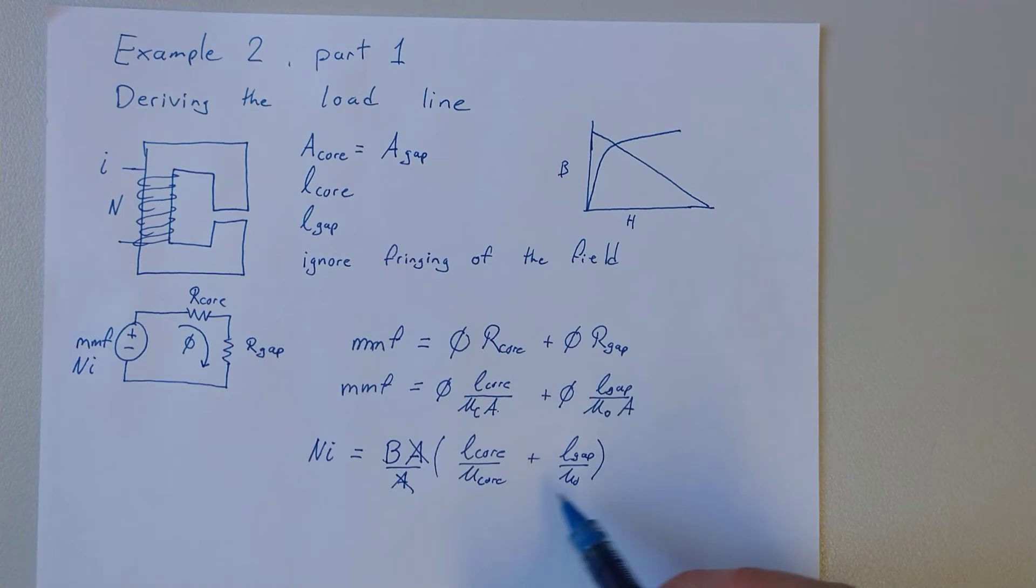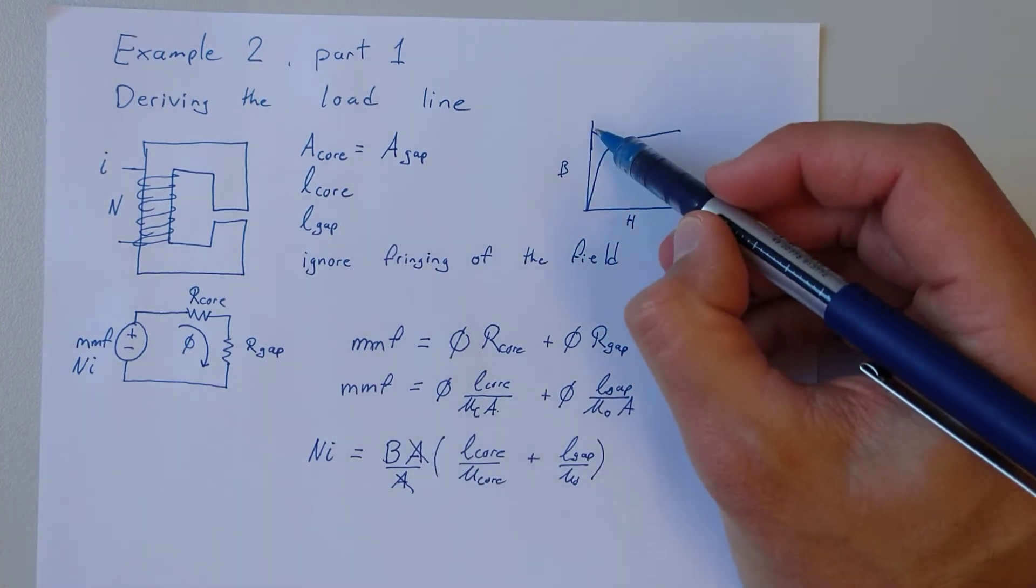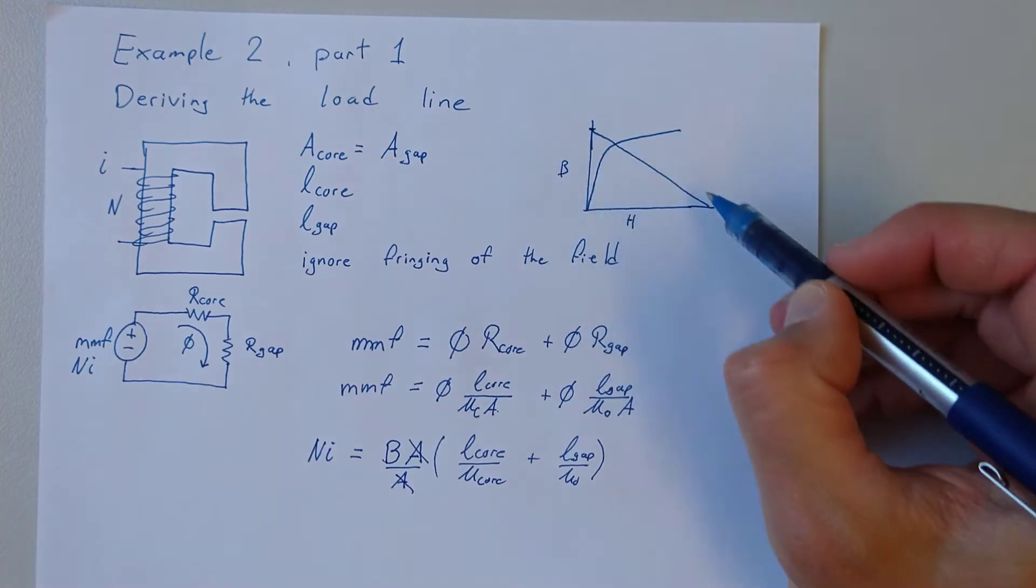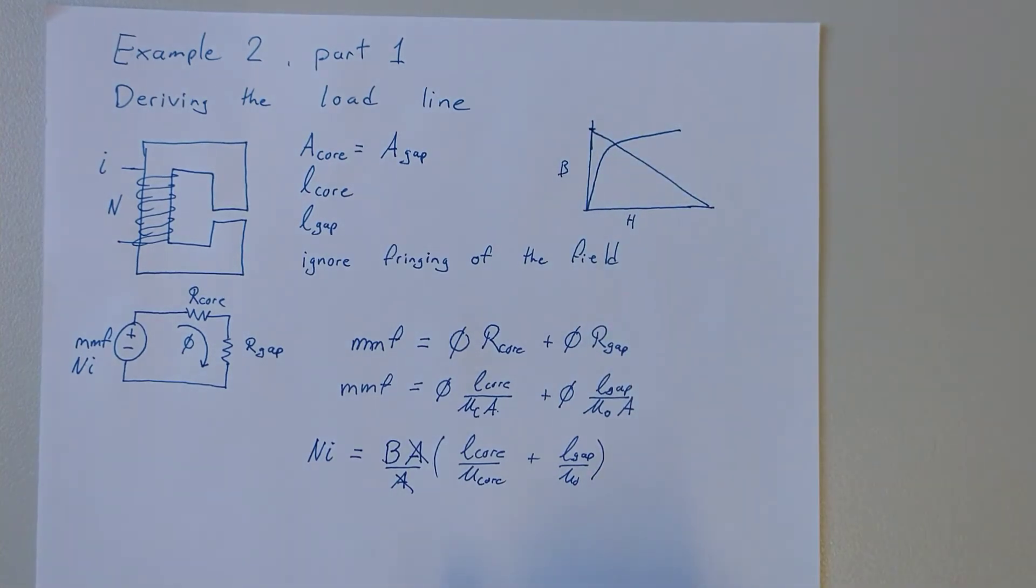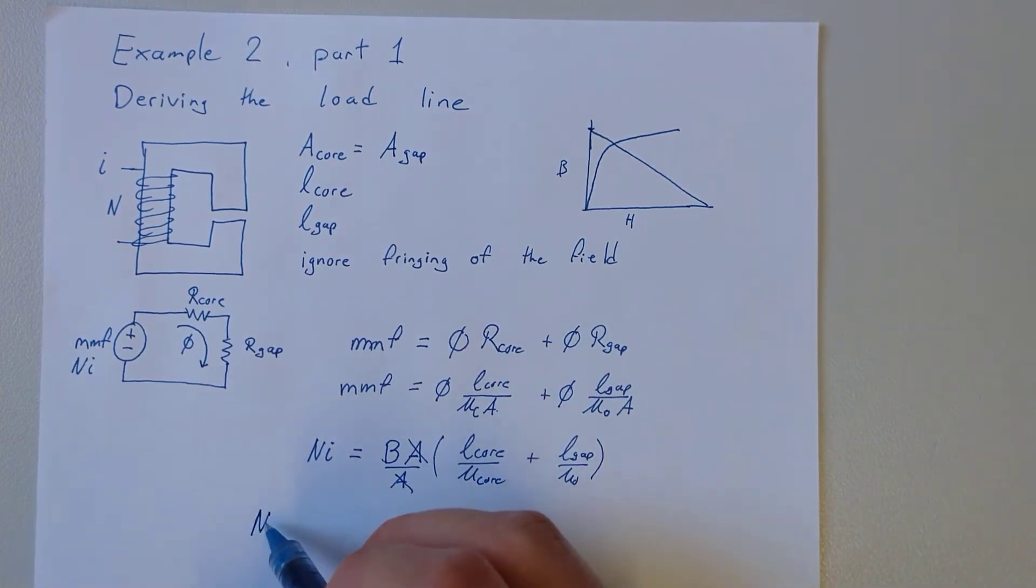We're going to create from this equation a linear equation where the intercepts are given by a B and an H. So if we solve for B we can get this Ni mu naught over the length of the gap.